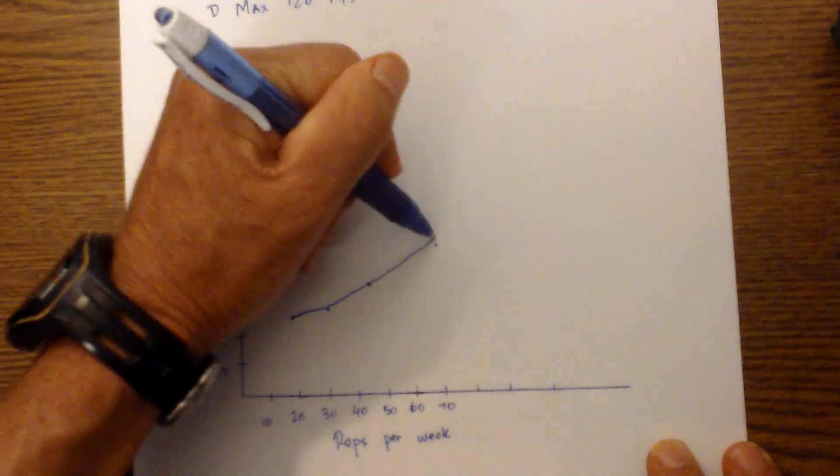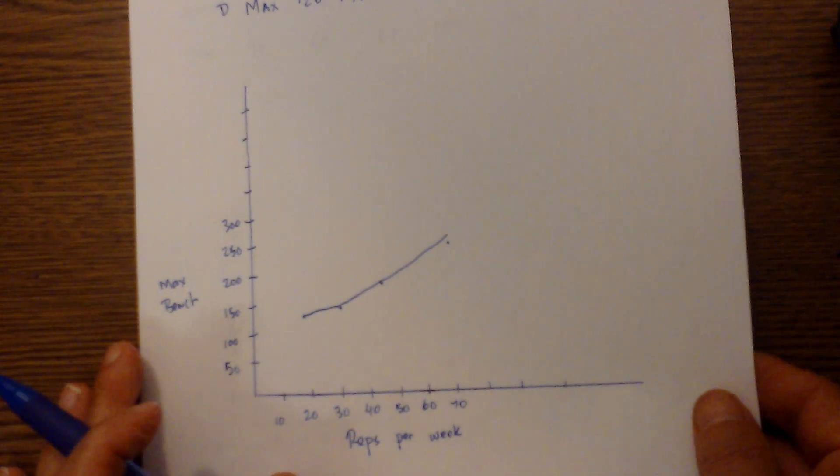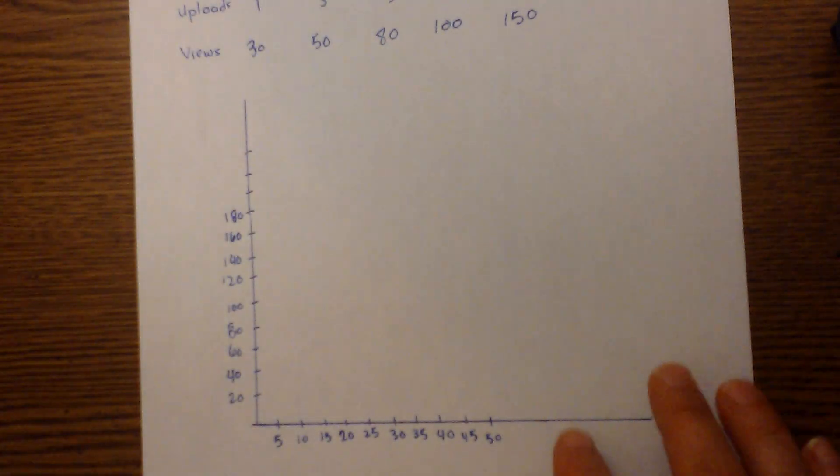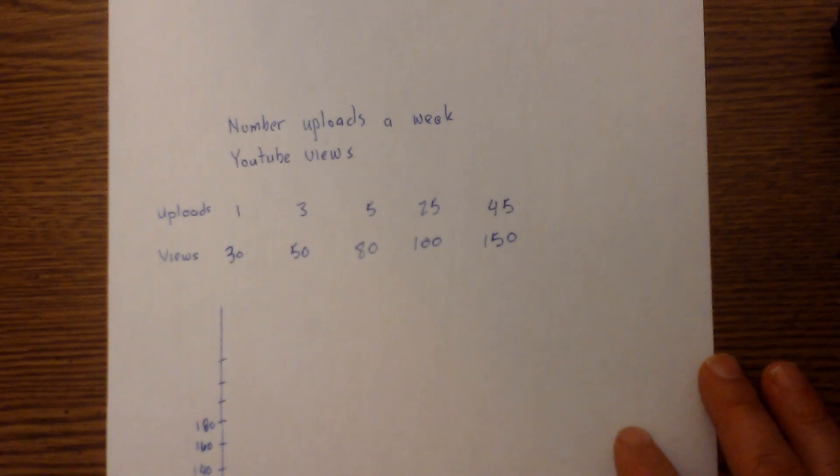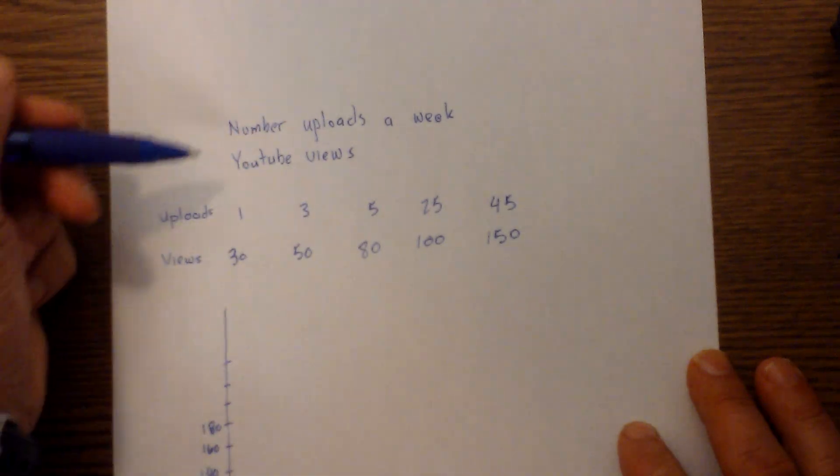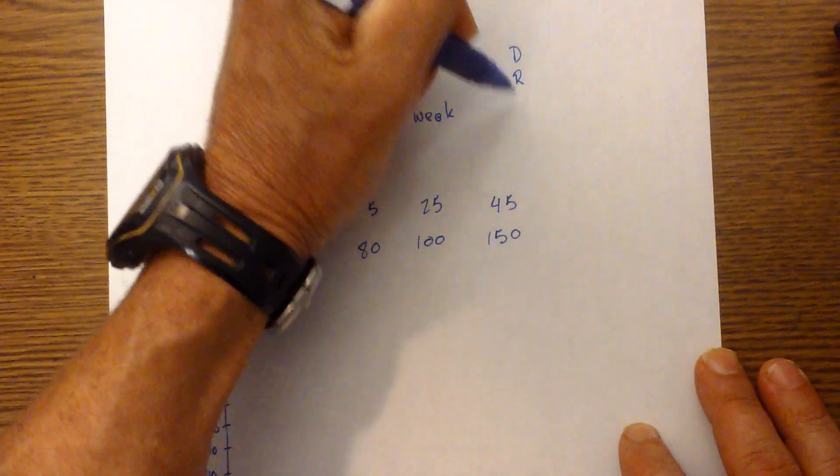Let's go ahead and look at one other example. We have the number of uploads a week and the number of YouTube views. Again, I've got DRY MIX. I want to figure out which is the independent and which is the dependent.